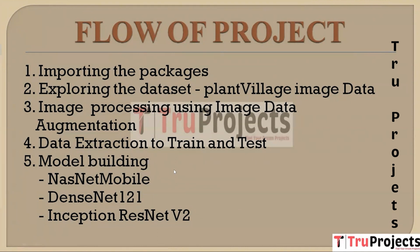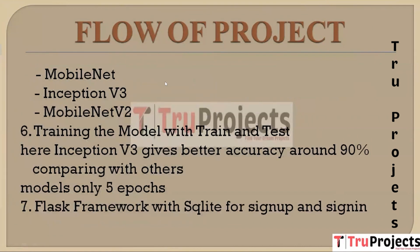Next, we have model building. Several deep learning models are constructed, including NASNet Mobile, DenseNet 121, Inception ResNet V2, MobileNet, Inception V3, and MobileNet V2. The models are then trained using the training dataset and evaluated on the testing dataset. Notably, Inception V3 yields the highest accuracy, reaching around 90% after only five training epochs.